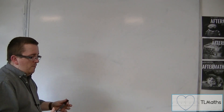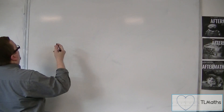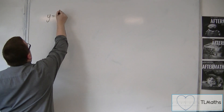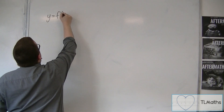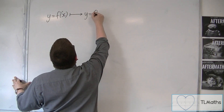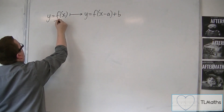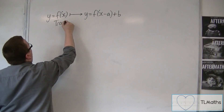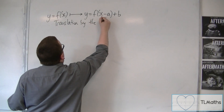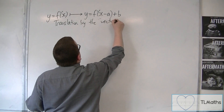From our graph transformations knowledge, firstly we had a translation. If y = f(x) is being transformed to y = f(x − a) + b, this is a translation by the vector (a, b).